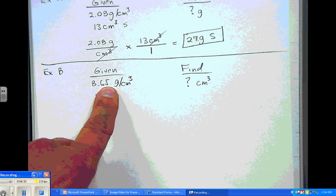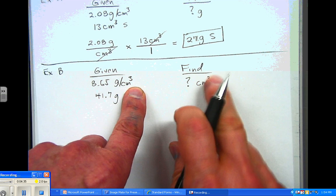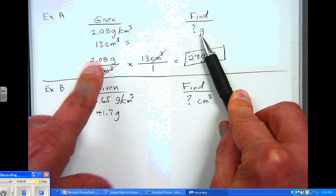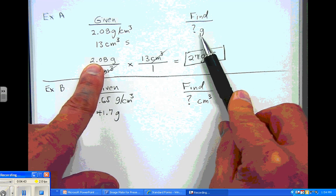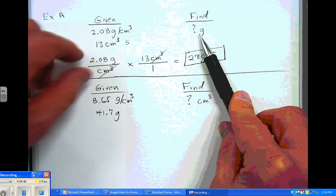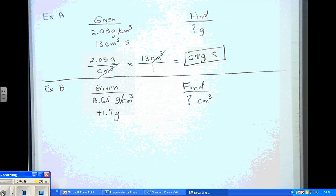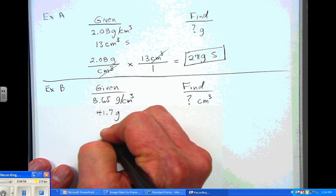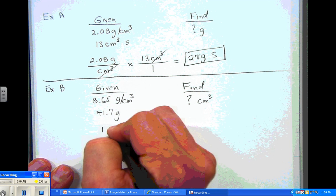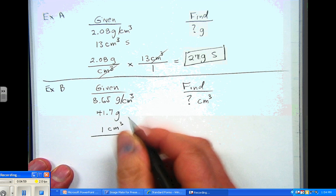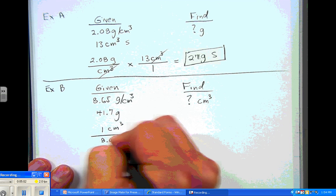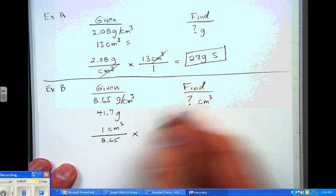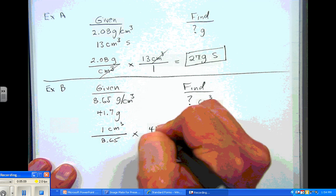So first job is to put cubic centimeters on top, because that's what we're trying to find. You see, back in the last problem, we were trying to find grams, so we put grams on top. And that's the equality that represents the density of that particular substance. So we're going to have, on top, 1 centimeter cubed. And on the bottom, we have the 8.65. Now we're going to multiply that by however many grams we were given, and that's 41.7 grams.